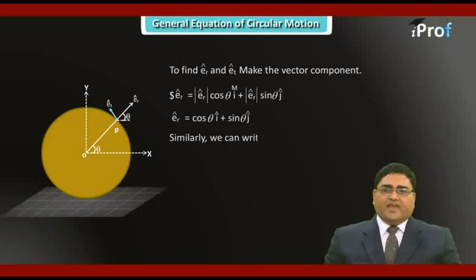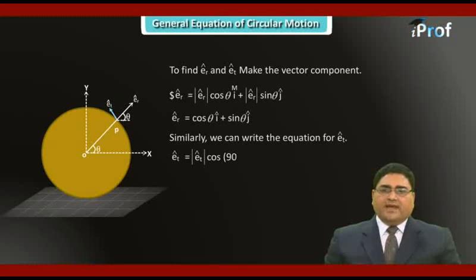Similarly, we can write the equation for ET cap vector. ET cap vector equals magnitude of ET cap cos 90 minus theta times minus I cap plus magnitude of ET cap cos theta J cap. So ET cap vector equals minus sin theta I cap plus cos theta J cap.